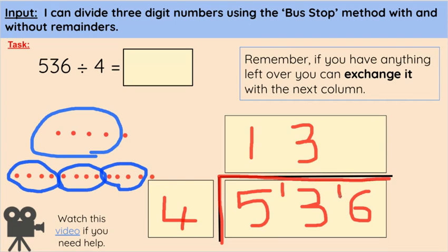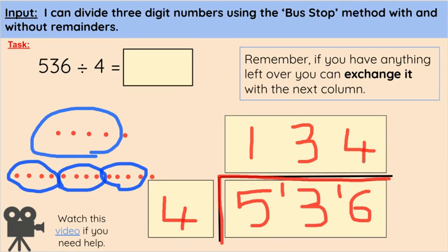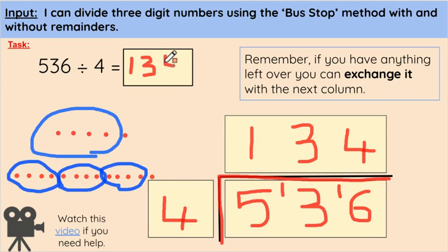Here's our extra 1 for the exchange. So now at the end, we want to see how many 4s there are in 16 — it's not just the 6, because we have this extra 1. In 16, I know there are four 4s, so I can put 4 up at the top. And then we have our answer: there are 134 fours in 536. So 536 divided by 4 equals 134.